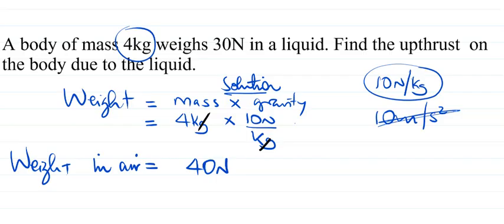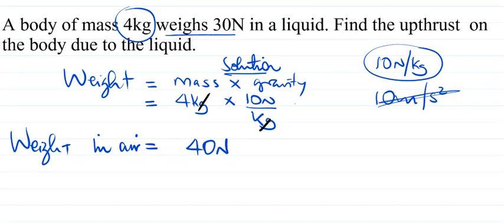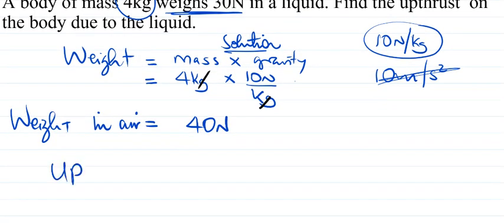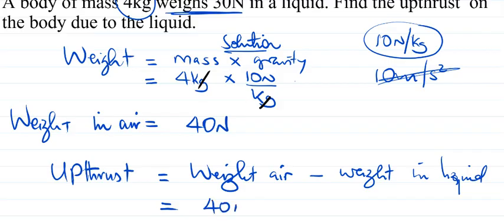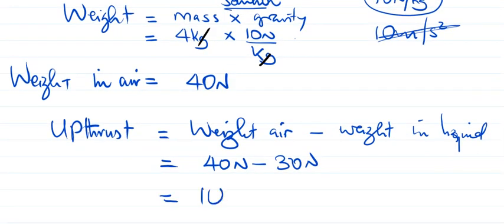The weight in liquid is already given — it's 13 newtons. So to find the thrust force: thrust force equals weight in air minus weight in liquid, which is 40 newtons minus 13 newtons. The difference is 27 newtons. So this is our thrust force.